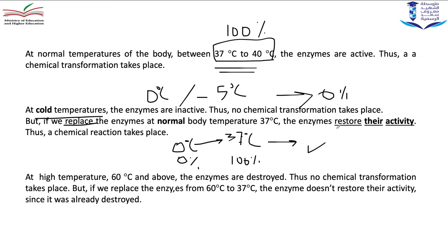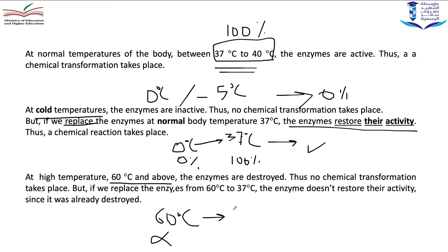When you take the enzyme out of the freezer, its activity is restored. However, at high temperatures — like 60 degrees Celsius and above — the enzymes are destroyed. No digestion occurs, even if I go back to 37 degrees Celsius.